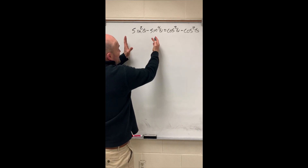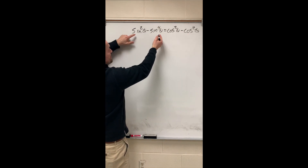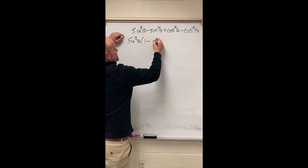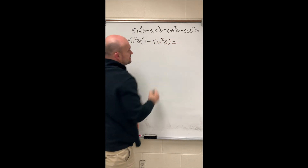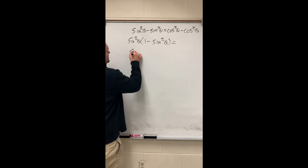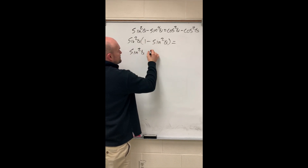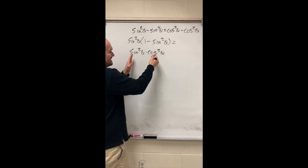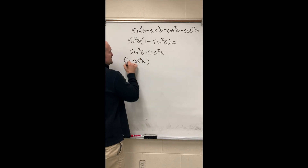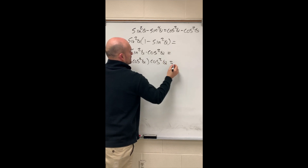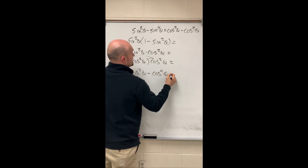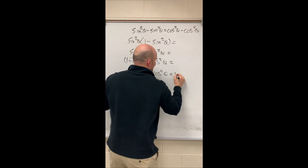In this problem, we want to make the sine side look like the cosine side. I recognize I have extra sines, so I can factor out a sine squared of theta. If I factor out sine squared, I'm left with 1 minus sine squared of theta. That gives me cosine, which will make this match the other side. One minus sine squared gives me cosine squared of theta. But I need this to be all cosines, so I'm going to rewrite sine squared as 1 minus cosine squared of theta using my Pythagorean identity. Applying this gives cosine squared of theta minus cosine to the fourth of theta — my identity.